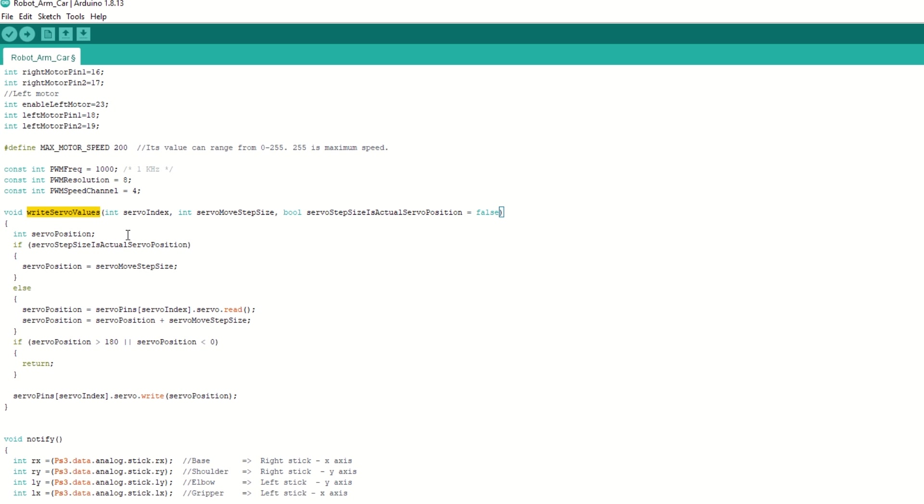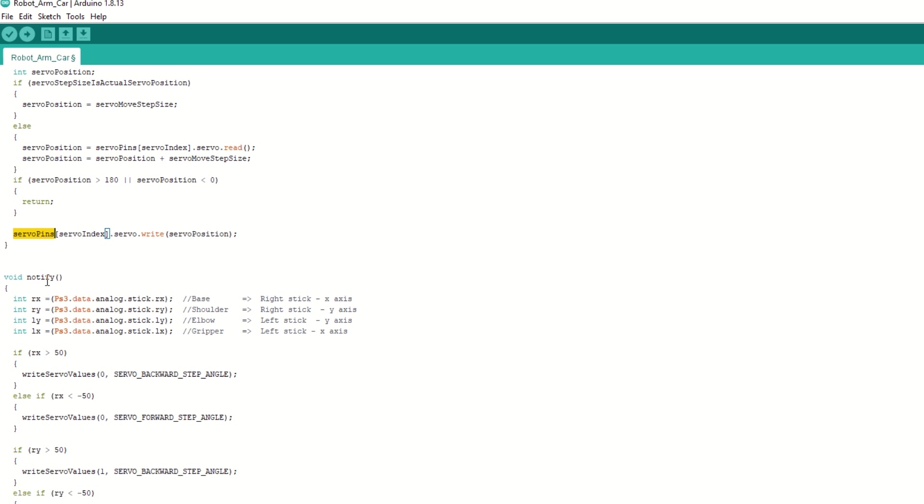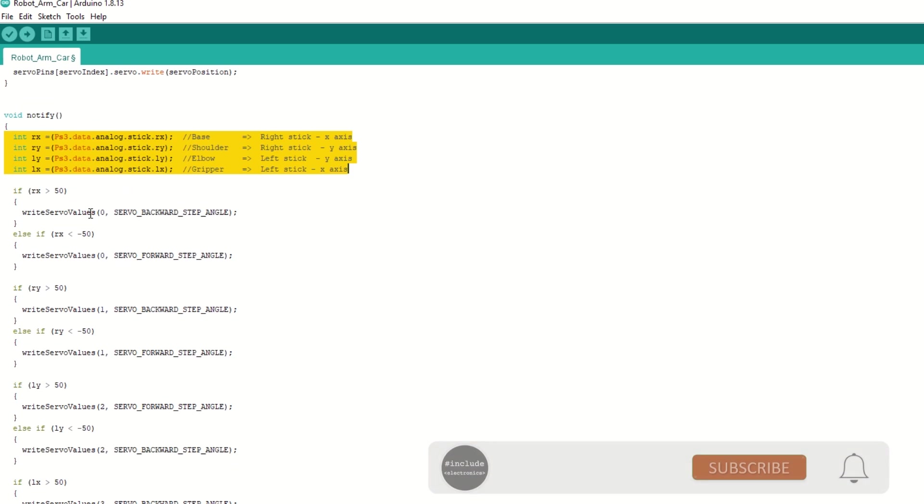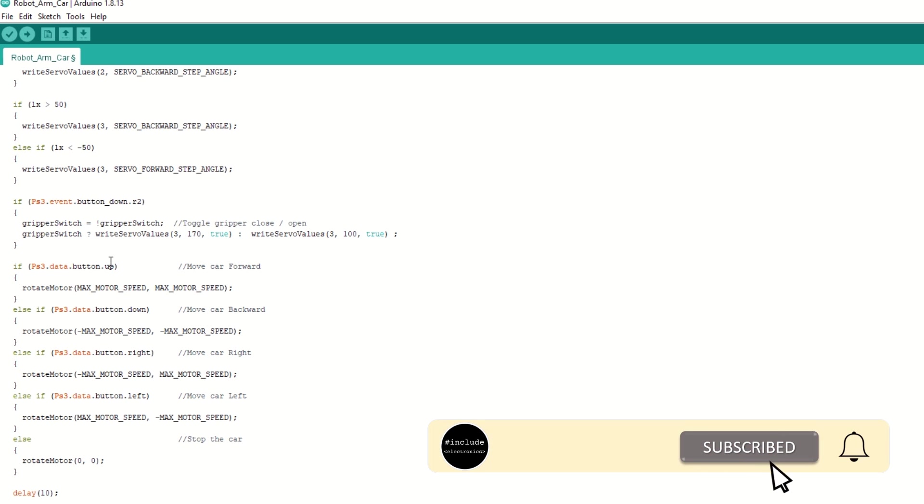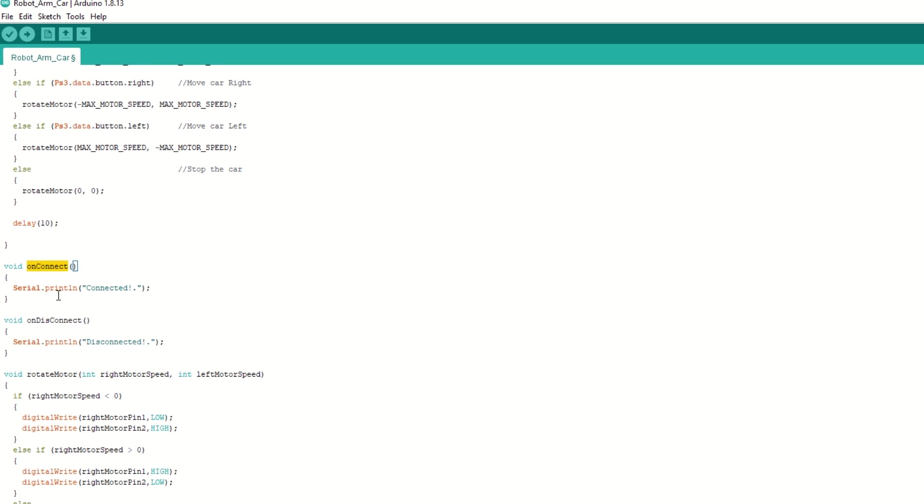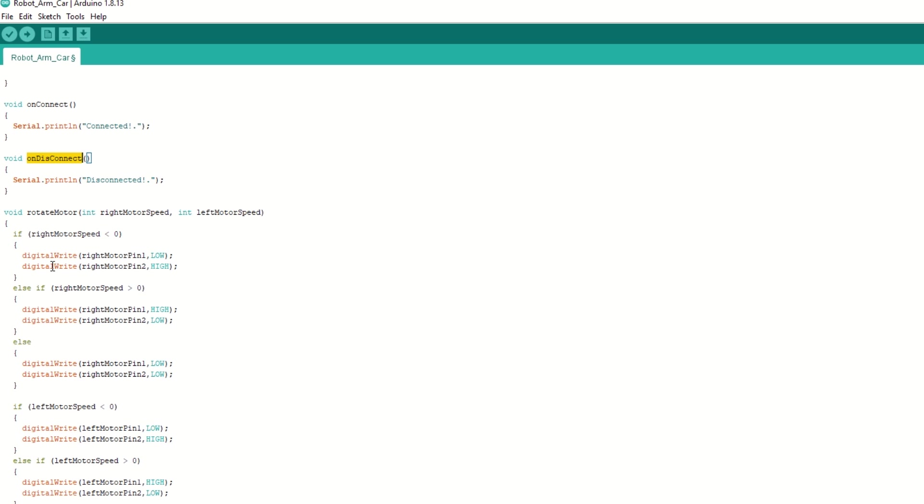We have write servo values function which will adjust the servo angle and also write it to servo. We have created notify callback function which will be called whenever we receive data from PS3 controller. Inside this function, we will read left and right joystick value and move robo arm servos accordingly. We will also read the up, down, left, right buttons and move the car by calling the rotate motor function. We have on connect callback function which will be called when PS3 controller is connected. We have on disconnect callback function which will be called when PS3 controller is disconnected.